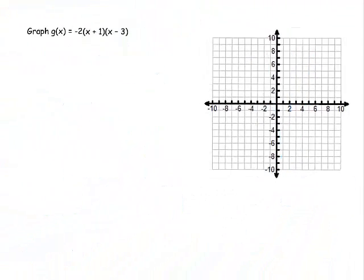This one's already in factored form. Excellent. Notice its value is negative 2, so it should be upside down like that. And since it's already in factored form, we can see what the 2 x intercepts are going to be.